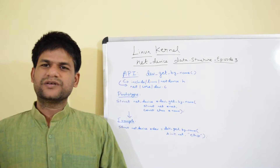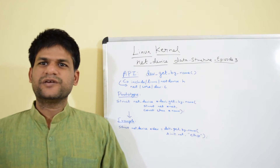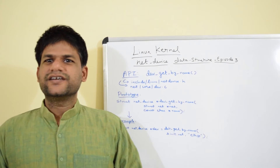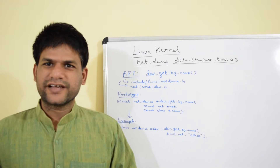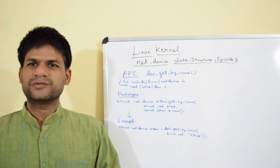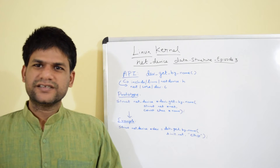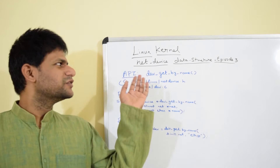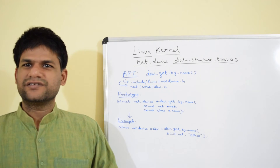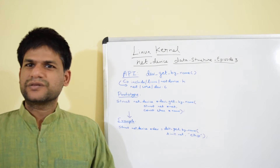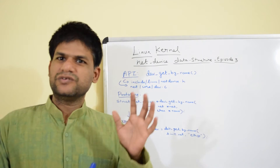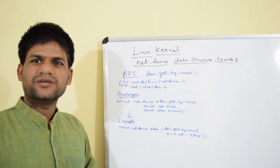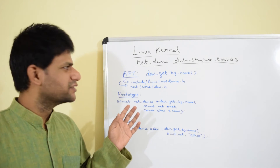Hi guys, welcome back to another episode of the Linux channel. So far in my previous episodes I have discussed about Linux kernel's net_device data structure, its significance in the Linux kernel networking stack, and various examples in episode 2 inside the Linux kernel source with a code walkthrough. In this episode I am going to discuss about one of the most important APIs of the net_device data structure, and in upcoming episodes I will cover more such important APIs.